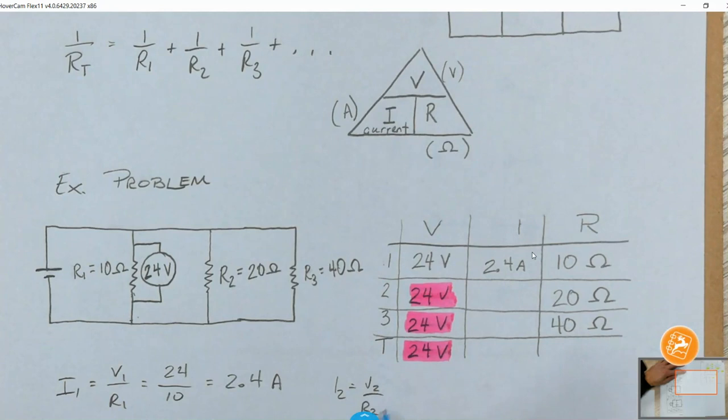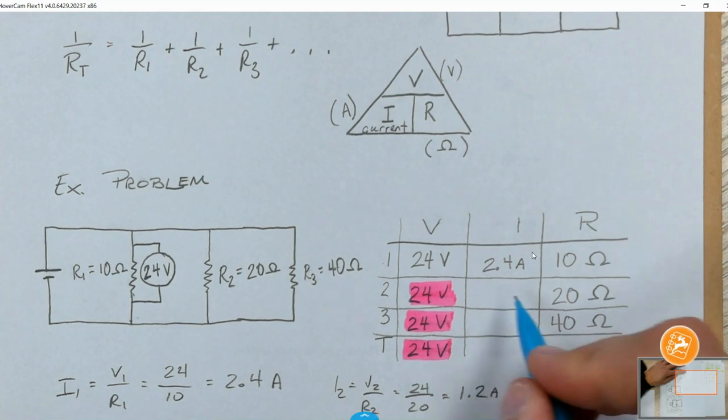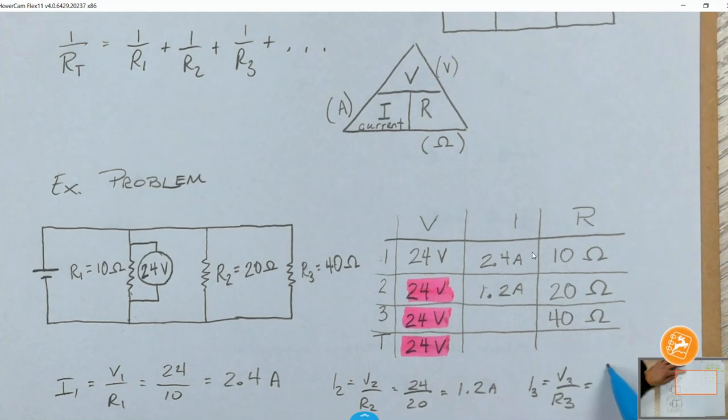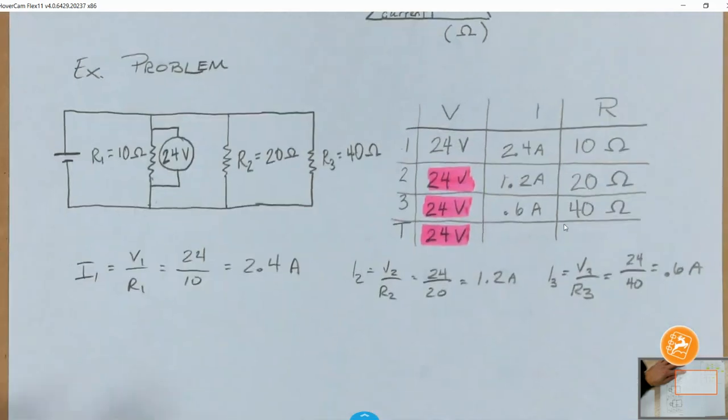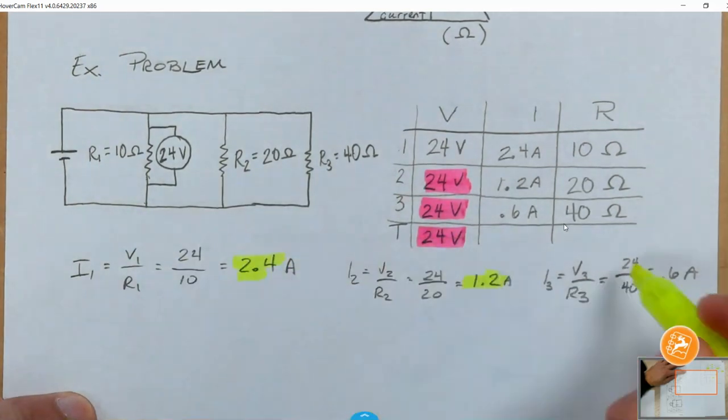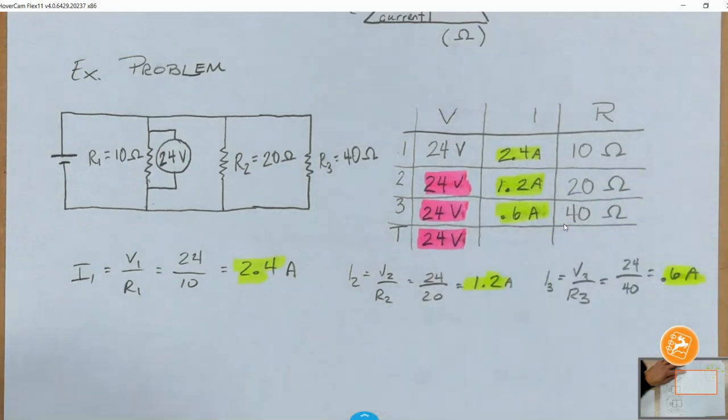I2, V2 over R2, 24 over 20, 1.2 amps. And I3 will be V3 over R3, 24 over 40, and this comes out to be 0.6 amps. So, we just had to do the math for these ones. Okay. Great.